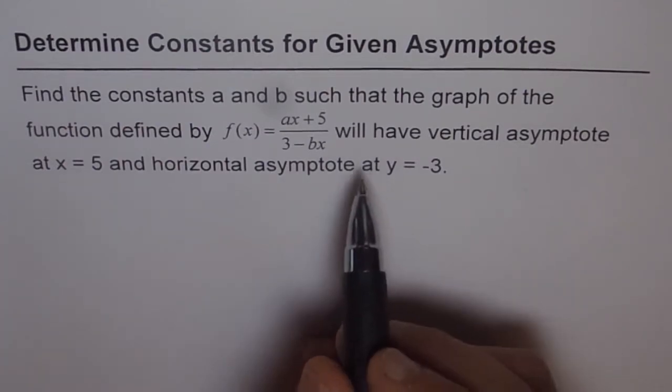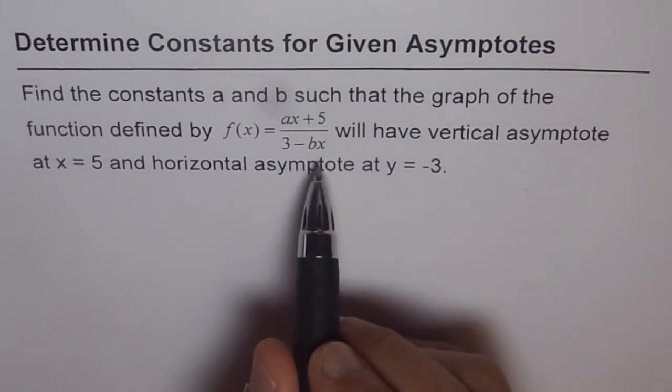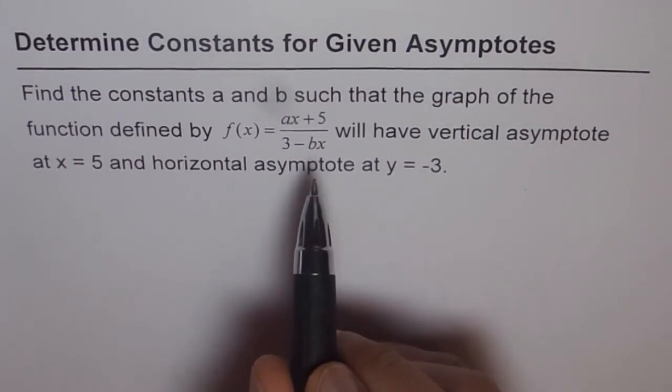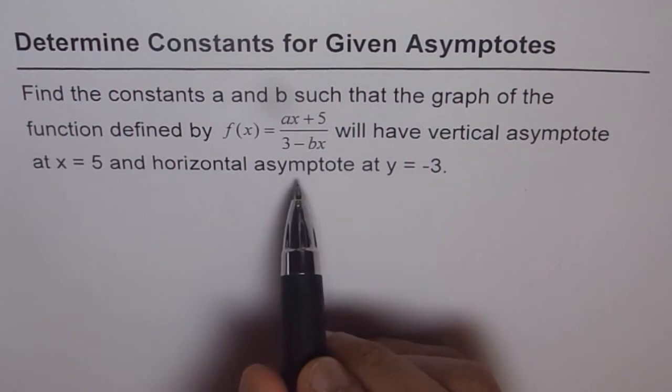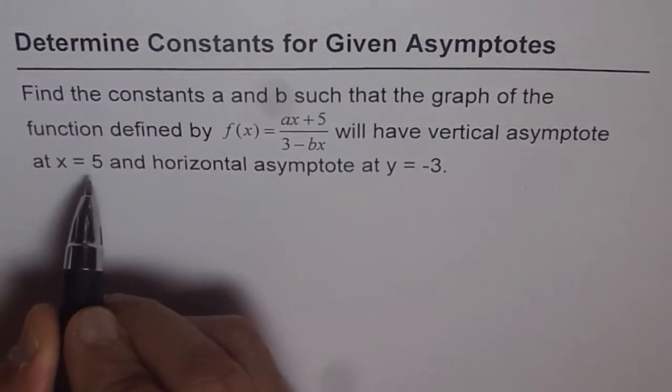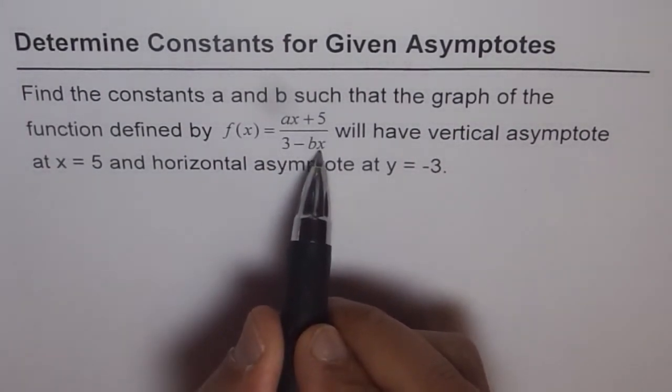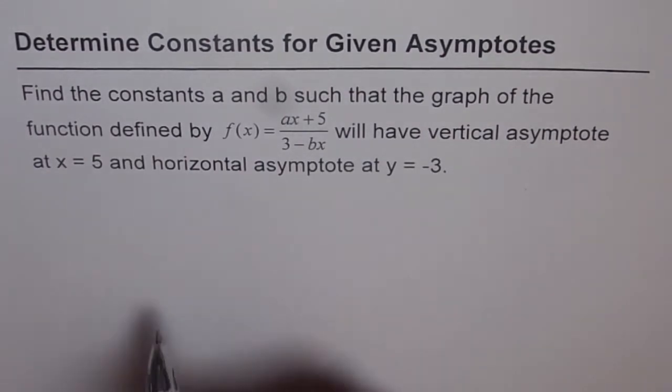Now, when do you have vertical asymptote? Vertical asymptote is a value of x for which the graph is undefined. So that means denominator is 0. So at x equals 5, if we have a vertical asymptote, that means if I substitute 5 here, denominator should become 0.